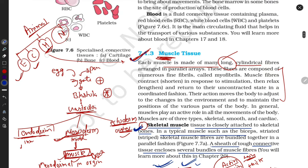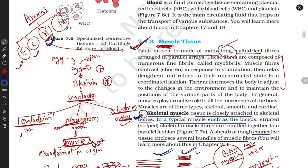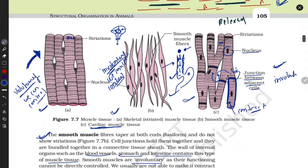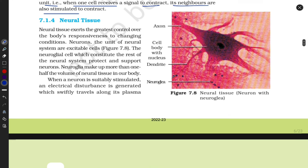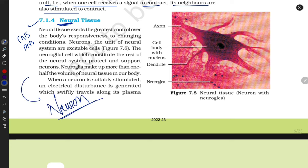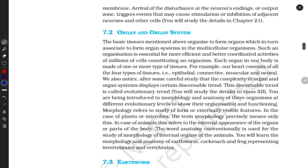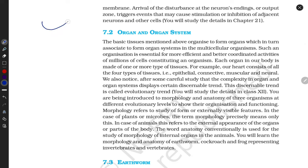That is all about muscle tissue. Next is neuron - neural tissues. Neural tissues are present in our CNS. The neuron is the structural and functional unit of the neural system. Neurons are excitable cells. I'm drawing a neuron for you now.